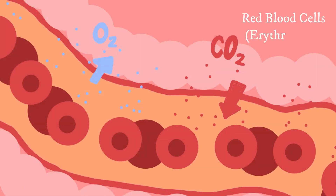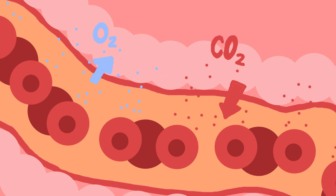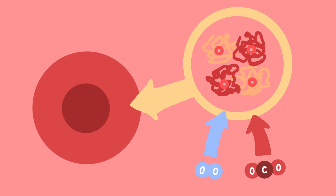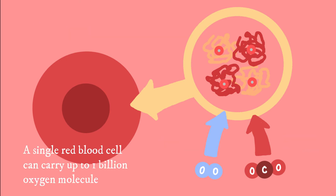Red blood cells, also called erythrocytes, make up 44% of blood and are the most abundant cell in the body. These small cells contain a molecule called hemoglobin, which helps transport oxygen and carbon dioxide through the body. A single red blood cell can carry 1 billion oxygen molecules.